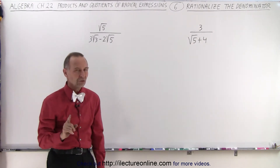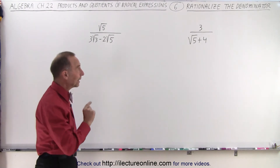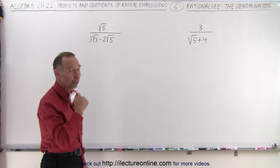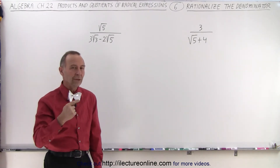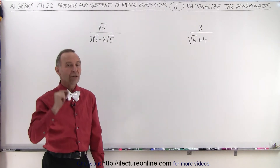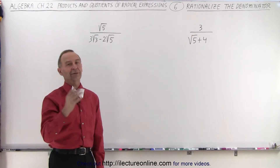Now the question is, how do we do that? The key is that we're going to multiply both the numerator and the denominator by the conjugate of the denominator.